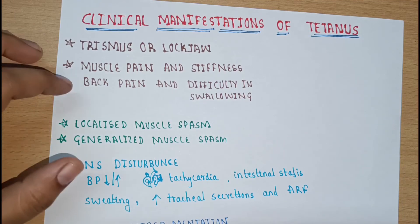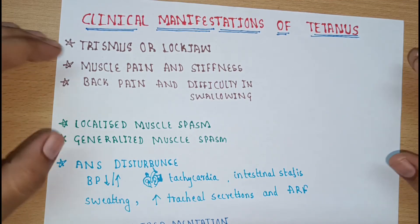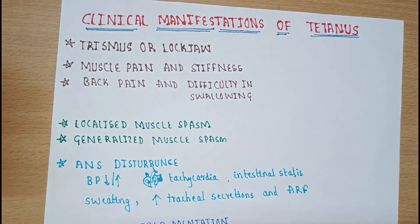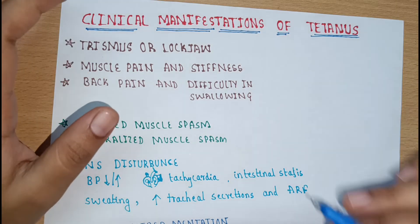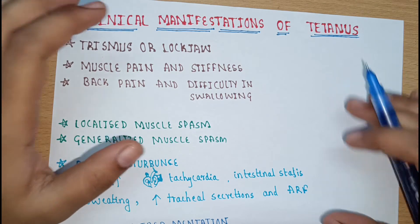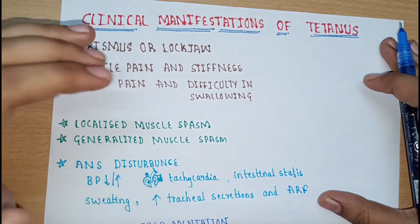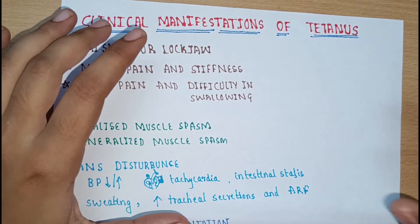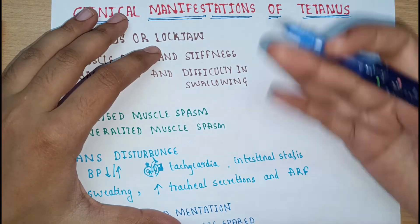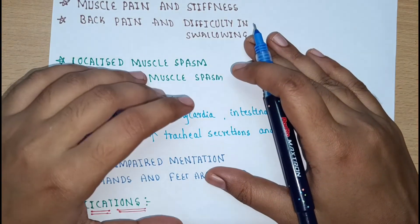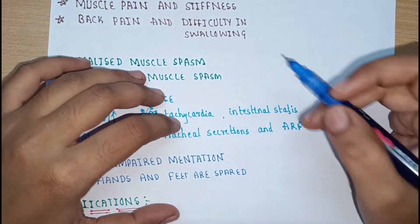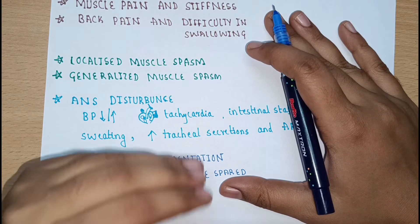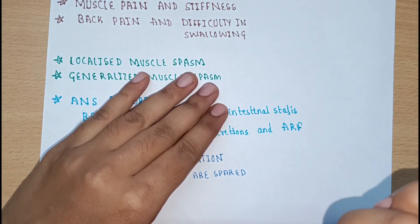Hello everyone, welcome to our channel Daily Doctor. This is the second video on tetanus. In our previous video we discussed the introduction of Clostridium tetani, its pathogenesis, and mode of transmission. Now we will move on to the clinical manifestations — the signs and symptoms we can see in this disease. Before moving on, let us recall what happens during pathogenesis once the toxin enters inside the motor nerve terminals.